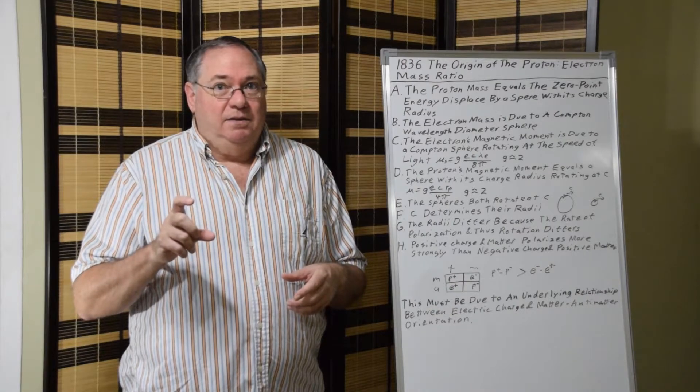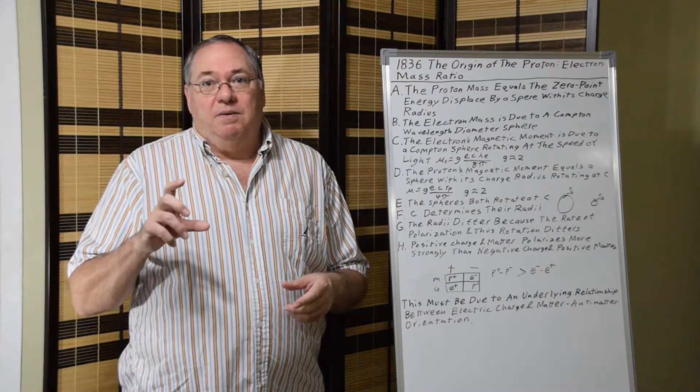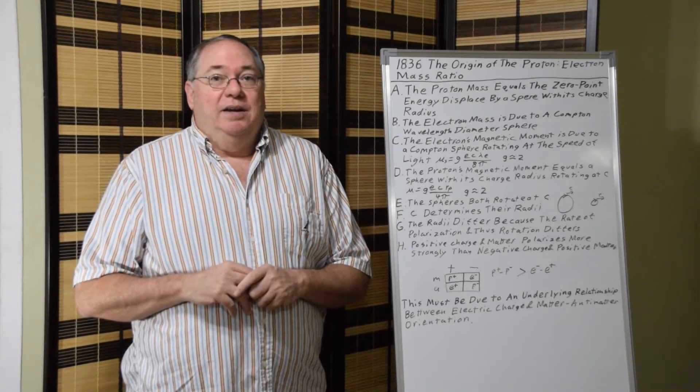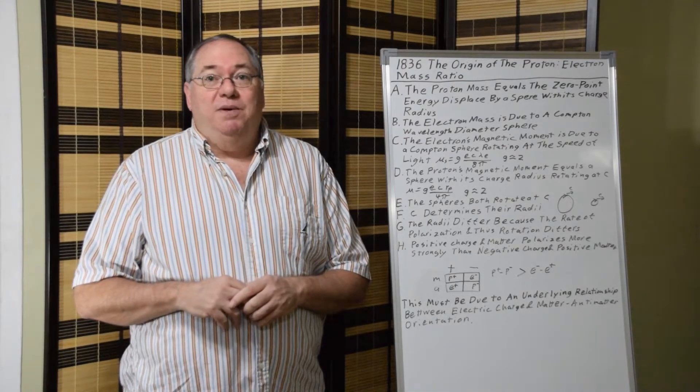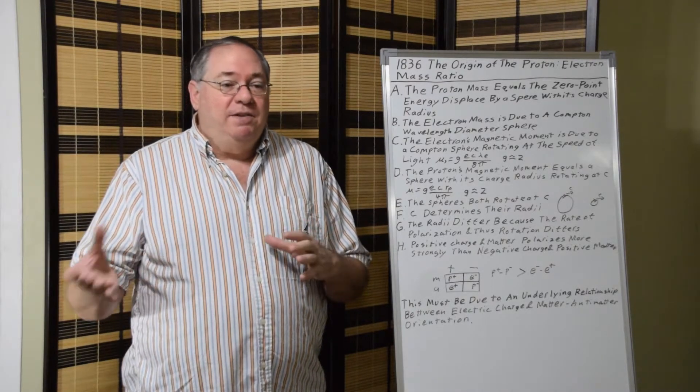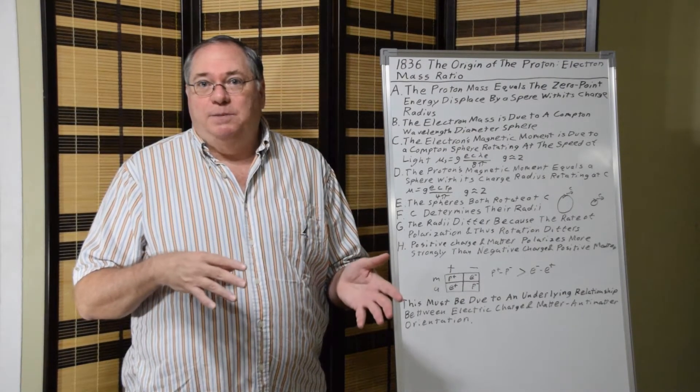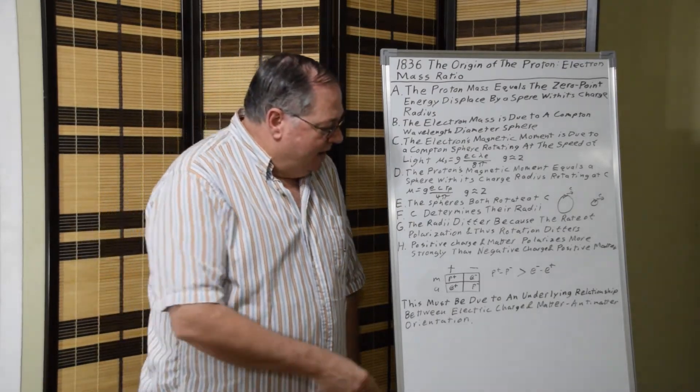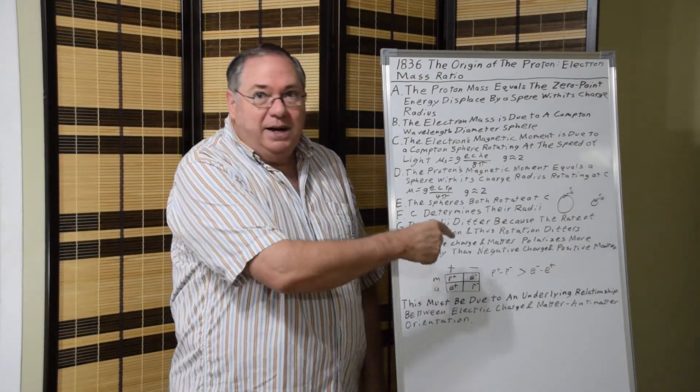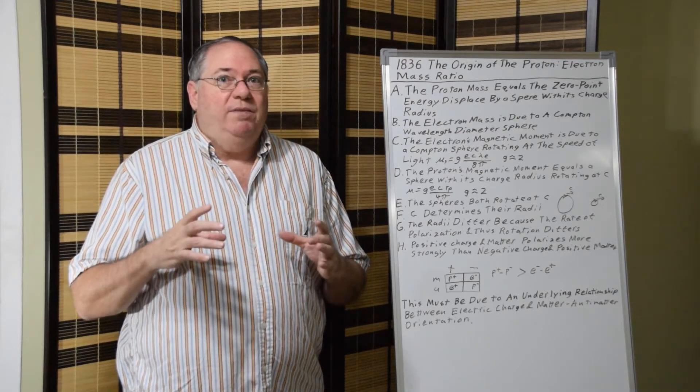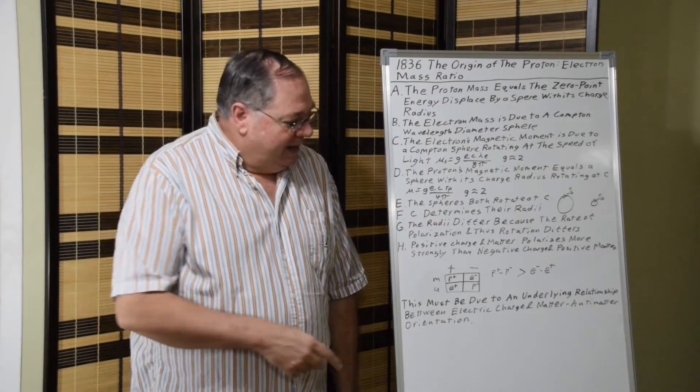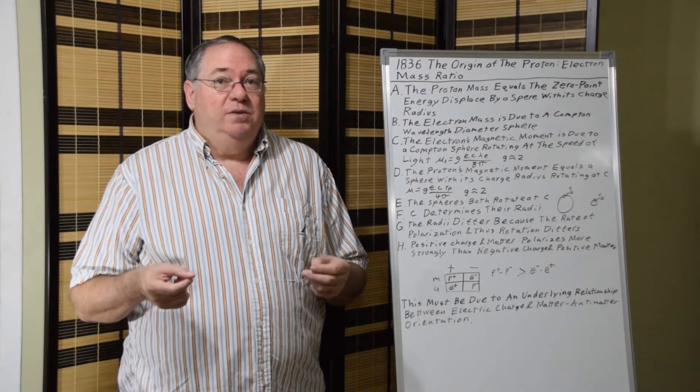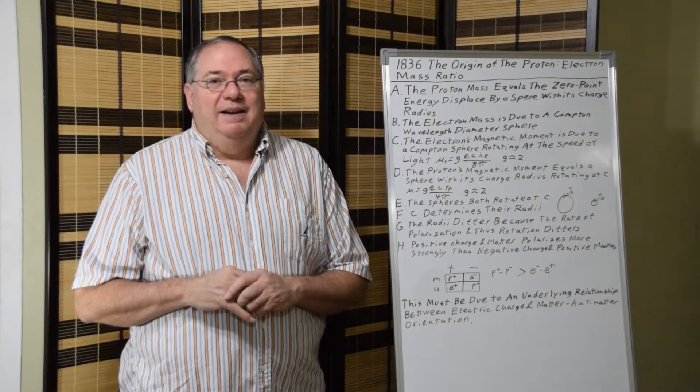So we have two different types of dipoles. One is polarized faster, rotates faster, and forms protons. The other one rotates slower and forms electrons. Now I said I was going to give you the origin of the 1836 difference. Well, I don't know why one rotates slower than the other. It could be that you have different distributions of wavelengths which cause different speeds of rotation. It could be something else related to the difference between electric charge and matter charge, antimatter. What is causing this different rate of polarization that leads to the mass difference? I haven't figured it out yet. And I'll do a video when I do.